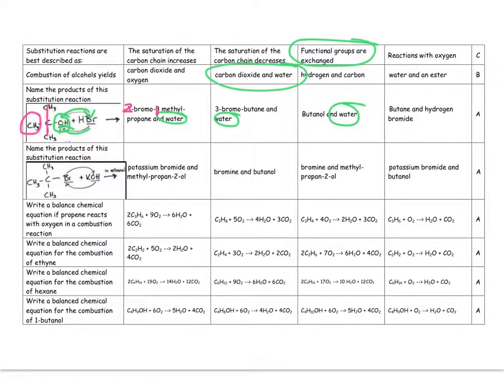So it's 2-bromo, methyl, propane, and then water is the other product. And then when we flick it the other way around, what have we got? We have got some, the bromine goes and takes over over there.